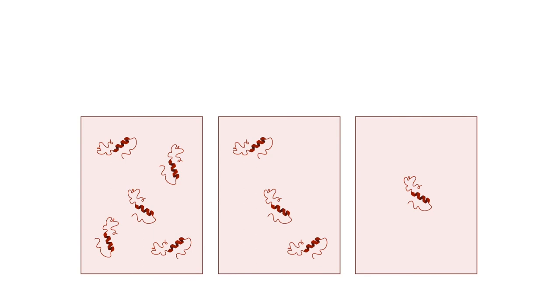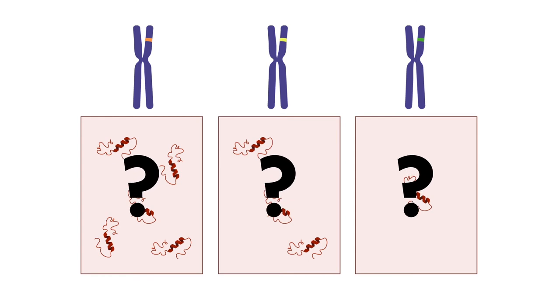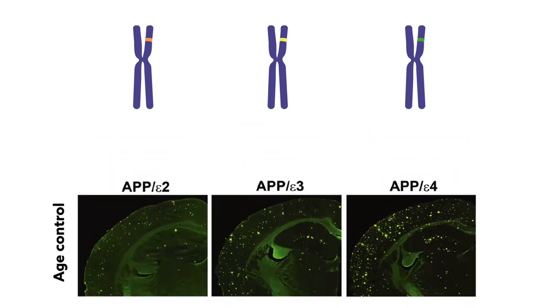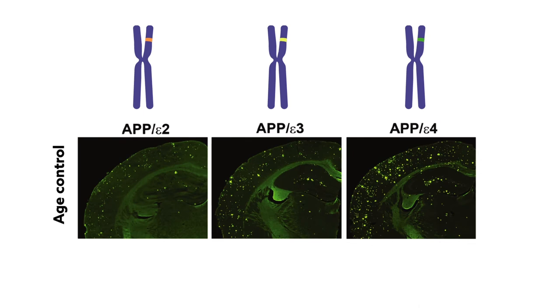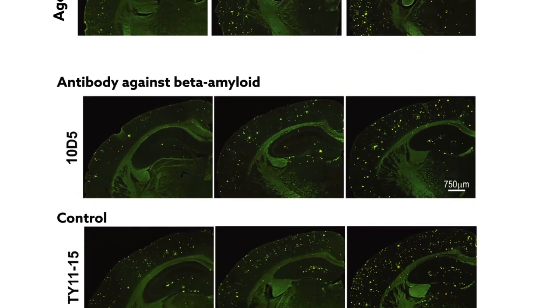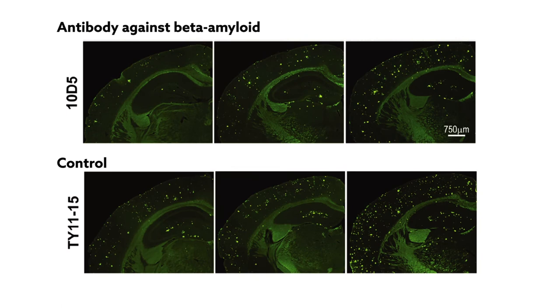Because the amount of amyloid beta depends on a person's APOE genotype, the researchers wanted to find out whether genotype could also predict how well someone responds to treatment. They did this by making mice with different human variants of the APOE gene, then treated the animals either with an antibody against beta-amyloid or a control antibody.